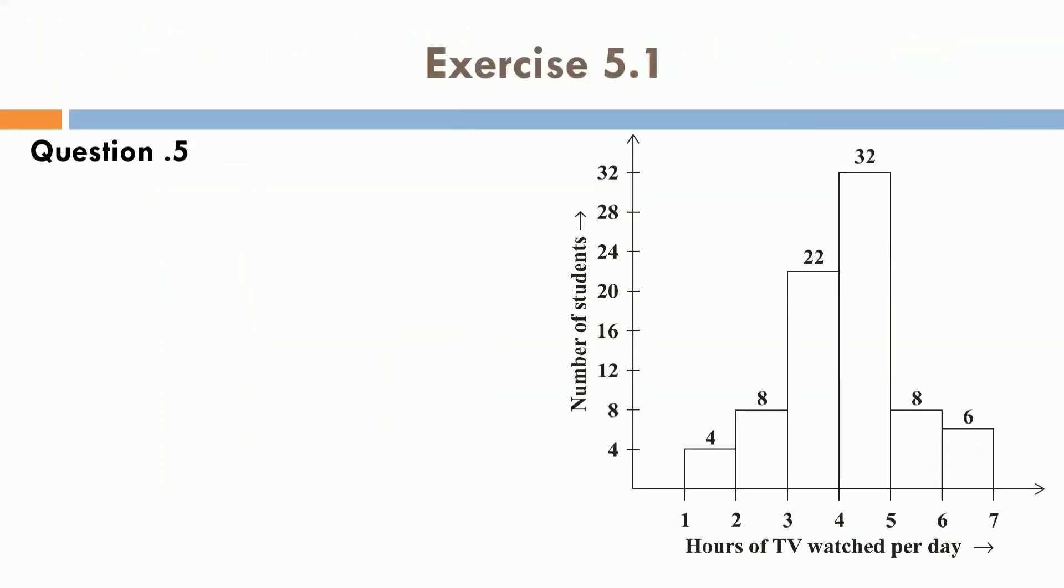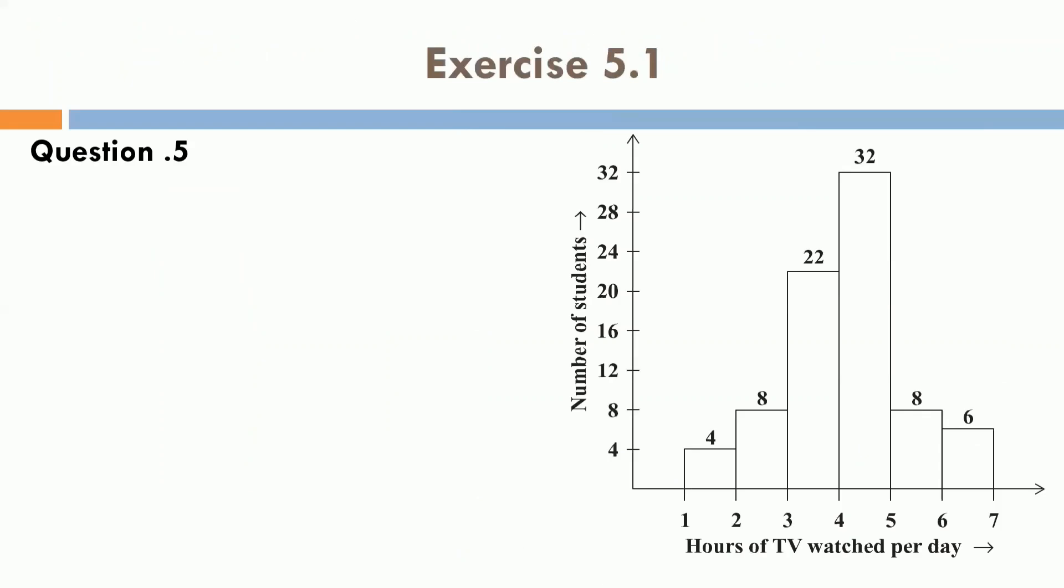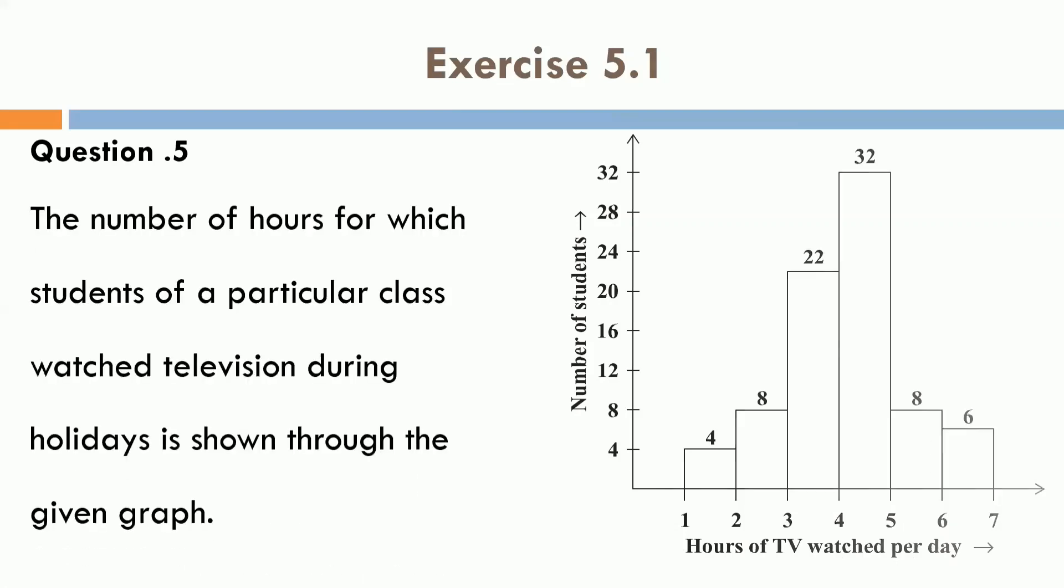Next is, question number 5, where you are given a histogram for number of students and hours of TV watched per day during holiday. So, here for 1 to 2 hours, 4 students are there, 2 to 3 hours, 8 students. Same way, over here, you can see for 4 to 5 hours, there are maximum number of students and for 5 to 6, there are 8 and 6 to 7, there are 6 students.